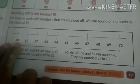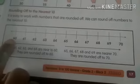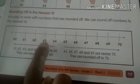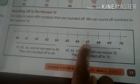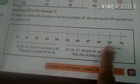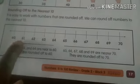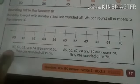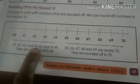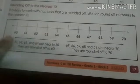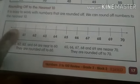Now we have given 60 to 70. Now what are the between numbers here? 60, 61, 62, 63, 64, 65, 66, 67, 68, 69. In between 60 to 70, we have 61 to 69. 61, 62, 63, and 64 are near to 60 children. They are rounded off to 60.